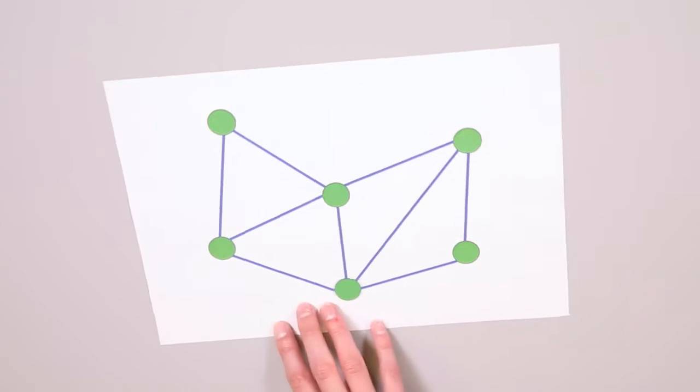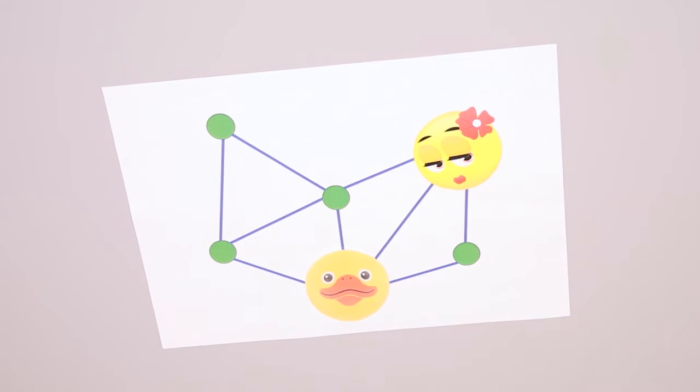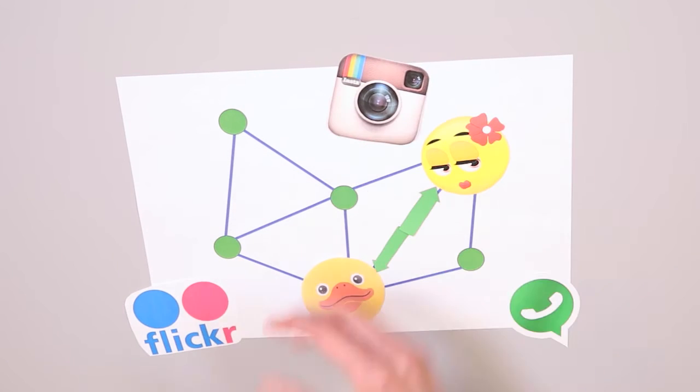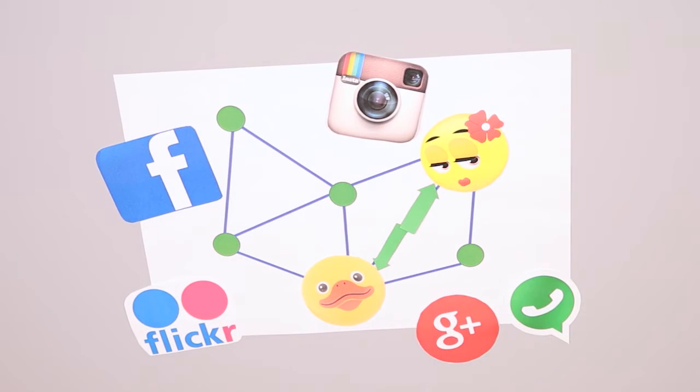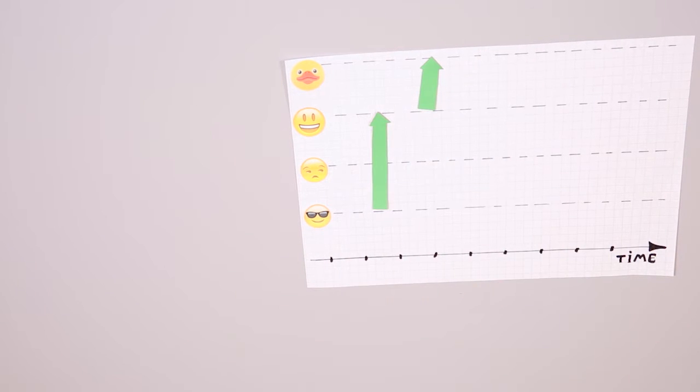Consider a group of people represented as a graph. Two nodes are connected if they interact. This can be a phone call, email, retweet, or personal communication. Each interaction happens at a certain time moment. It is easier to represent them on a timeline.